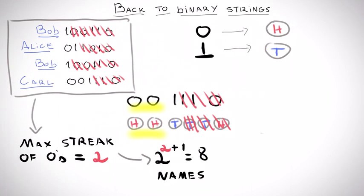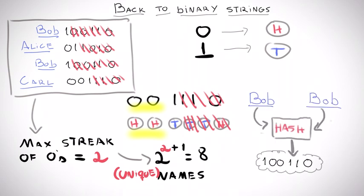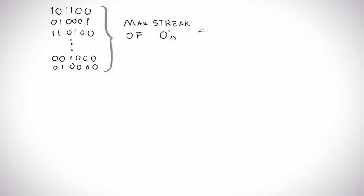In fact, this method estimates the number of unique strings we have seen so far. Why? Well, when we receive the same name twice, the hash function maps it to the exactly same string. Since this does not affect the maximum streak of zeros, it is as if we ignored repetitions automatically. So, our strategy is simply to keep track of the maximum streak of zeros seen so far.